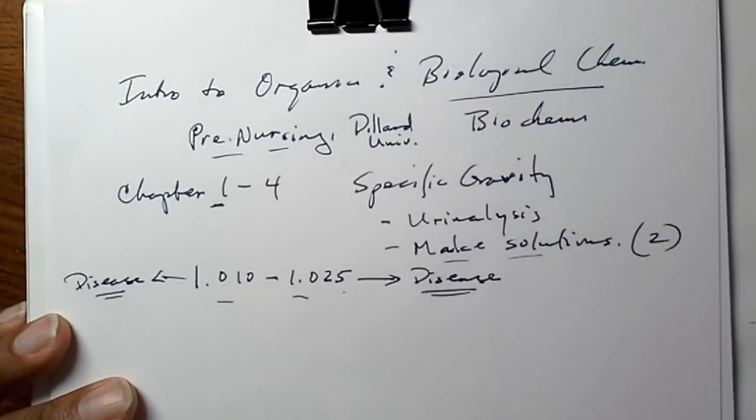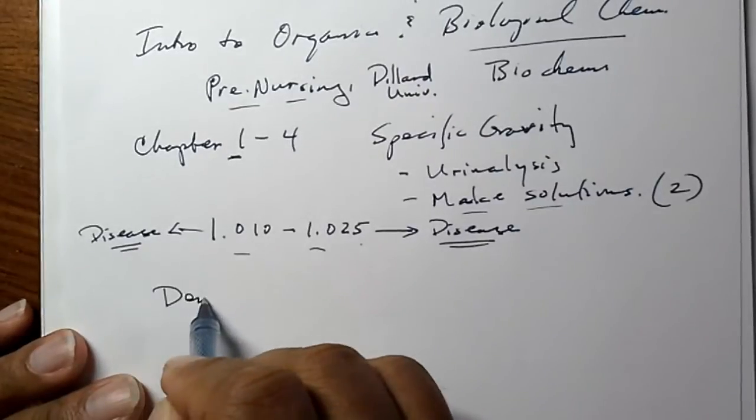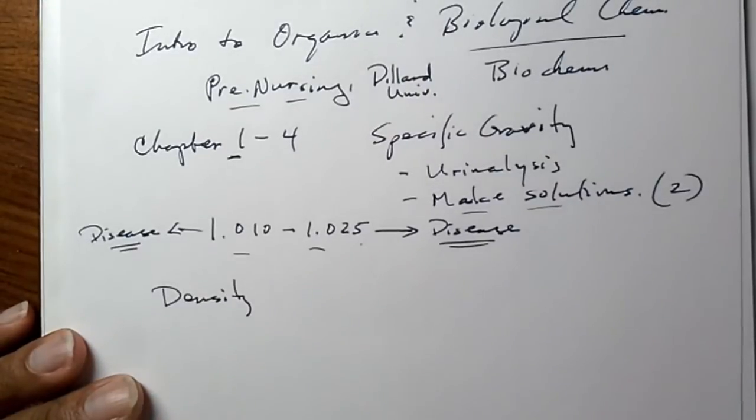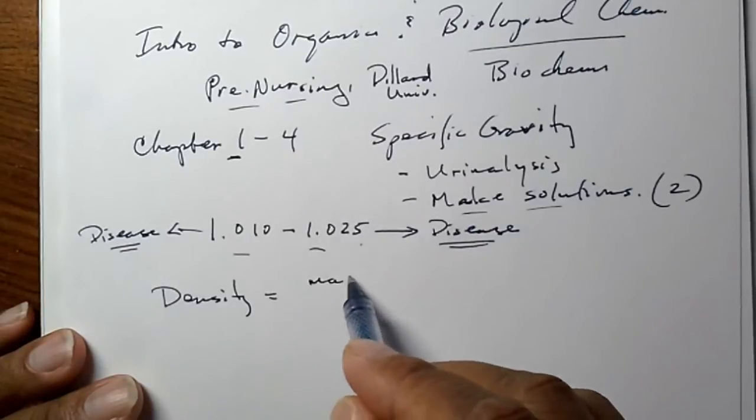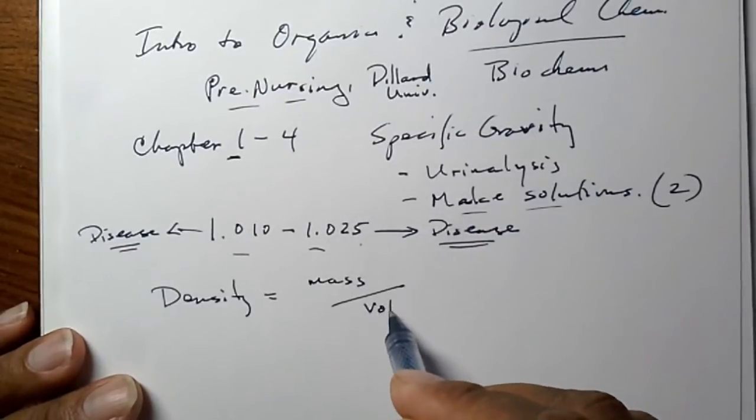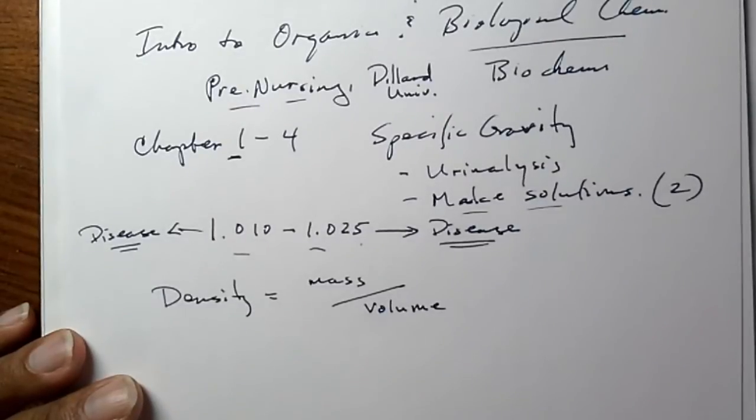And where do we get these numbers from? Well, we need to know the density of a solution. And what is density? Simply put, mass per unit volume.